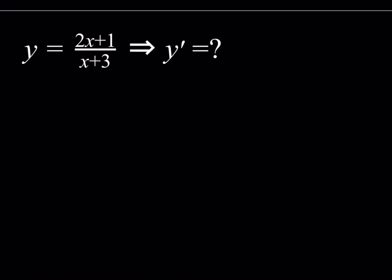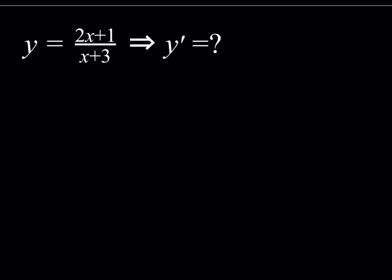So the first problem is y equals 2x plus 1 divided by x plus 3. This is a rational function, and we're going to differentiate this function with respect to x. I just want to say that I'm not claiming that these methods are in any way better or shorter — these are just different. They're not necessarily better or shorter, so I just wanted to say that as a disclaimer.